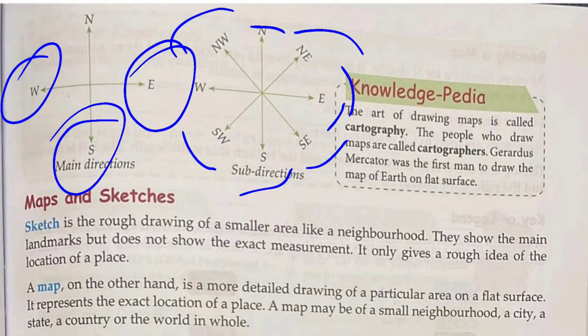The art of drawing maps is called Cartography. The people who draw maps are called Cartographers. Gerardus Mercator was the first person to draw the map of Earth on a flat surface.